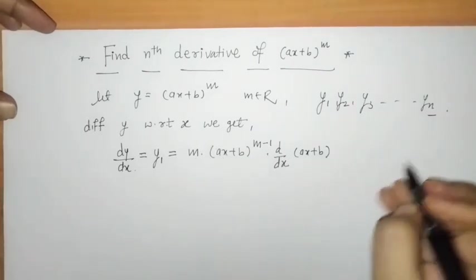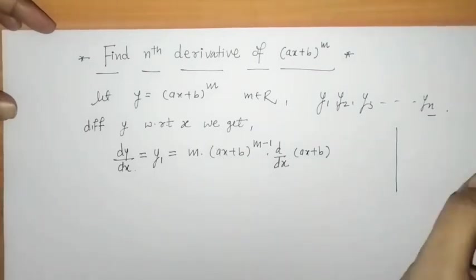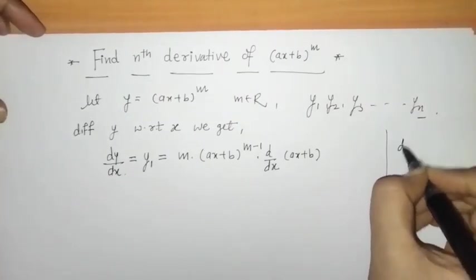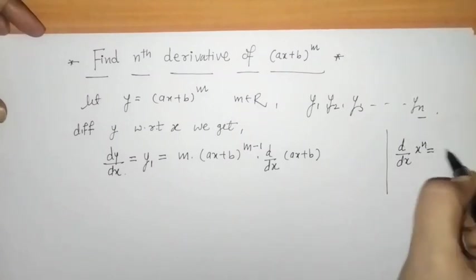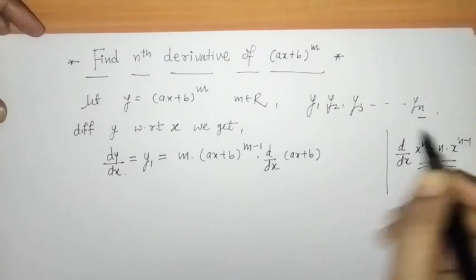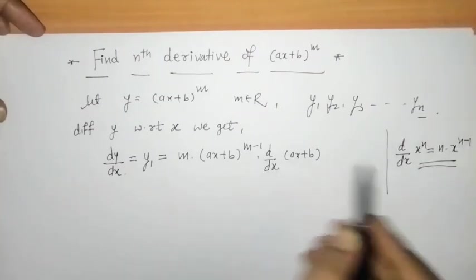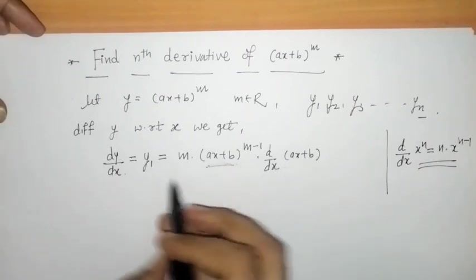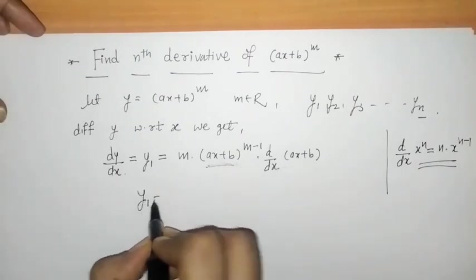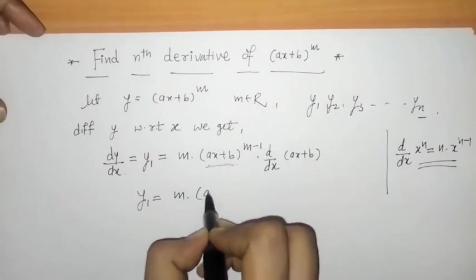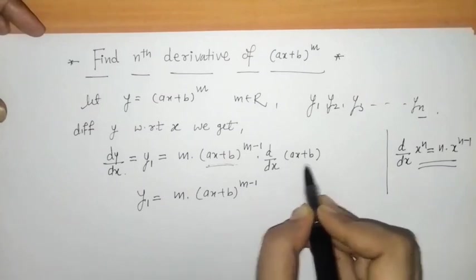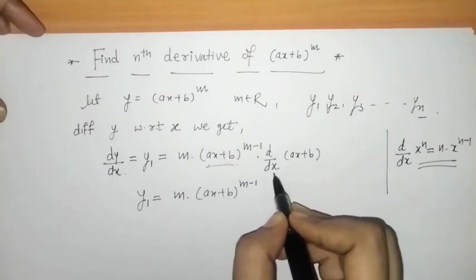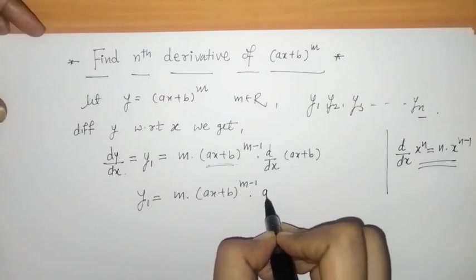Here we have used the chain rule, applying the formula: derivative of x raised to n is n into x raised to (n − 1). Comparing and applying this, we get y1 equals m into (ax + b) raised to (m − 1), and the derivative of (ax + b) with respect to x is a. So y1 = m·a·(ax + b)^(m−1).